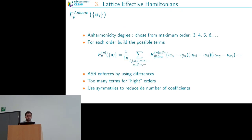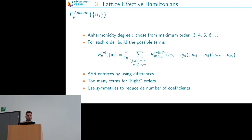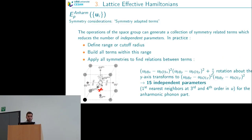For the anharmonic part, you choose the order of the Taylor expansion — third, fourth, fifth, or sixth order. For each order you express the coefficients and ensure the acoustic sum rule is satisfied using differences of displacements. There are many terms at third and fourth order, so we reduce them using symmetries of the reference structure. For regular perovskites using only first neighbors, this reduces to just 15 independent parameters.